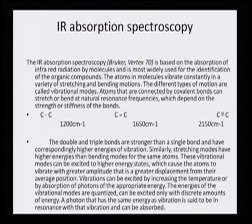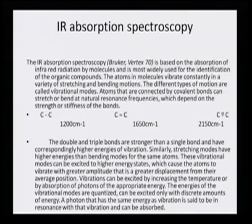Just imagine a pendulum that goes as high as the energization would take it. Vibrations can be excited by increasing the temperature or by absorption of photons of appropriate energy. The energies of the vibrational modes are quantized and can be excited only with discrete amounts of energy. A photon that has the same energy as a vibration is said to be in resonance with that vibration and can be absorbed — that is the time when it will affect the bond, and that effect will cause absorption peaks to appear in the spectrum.